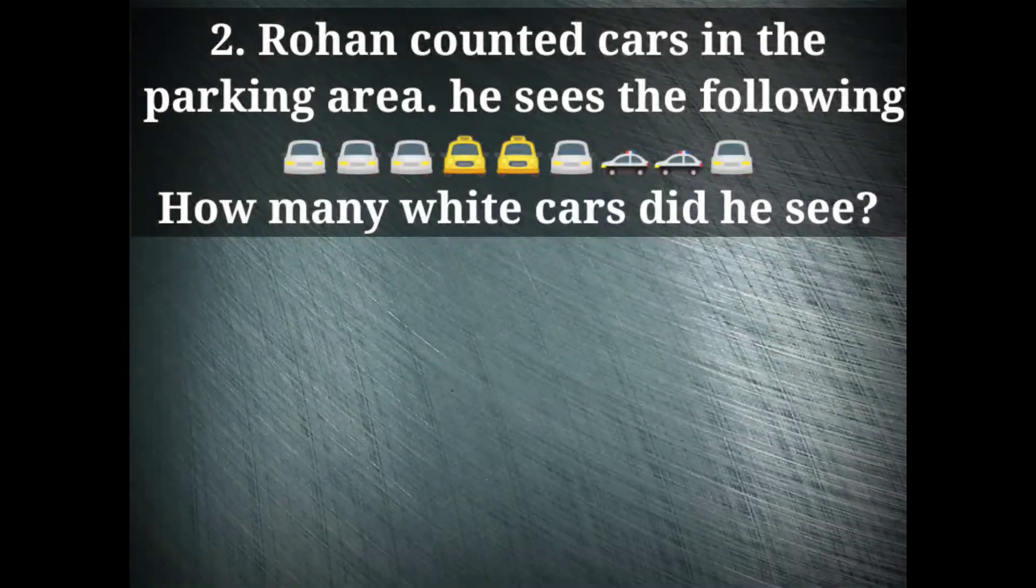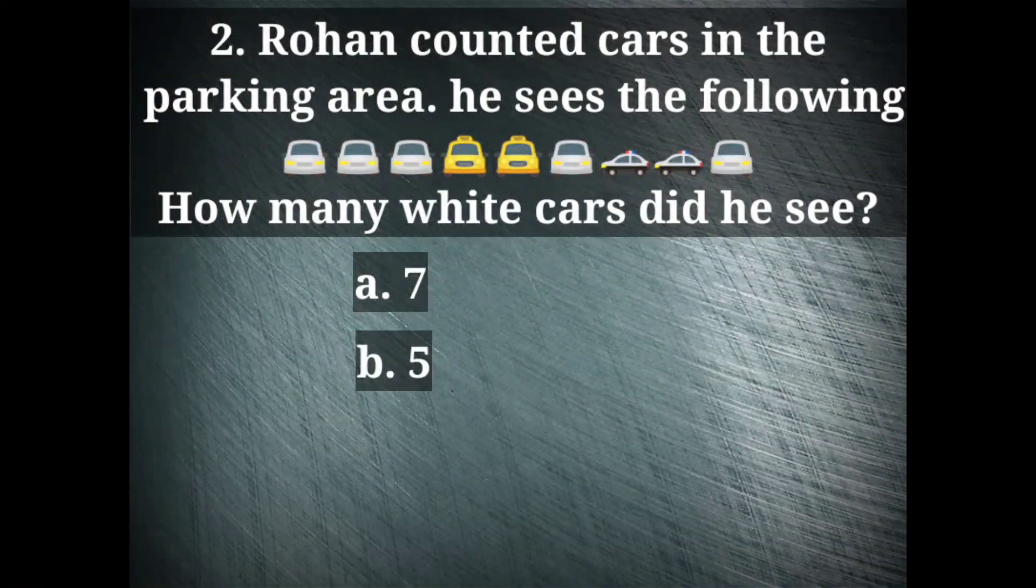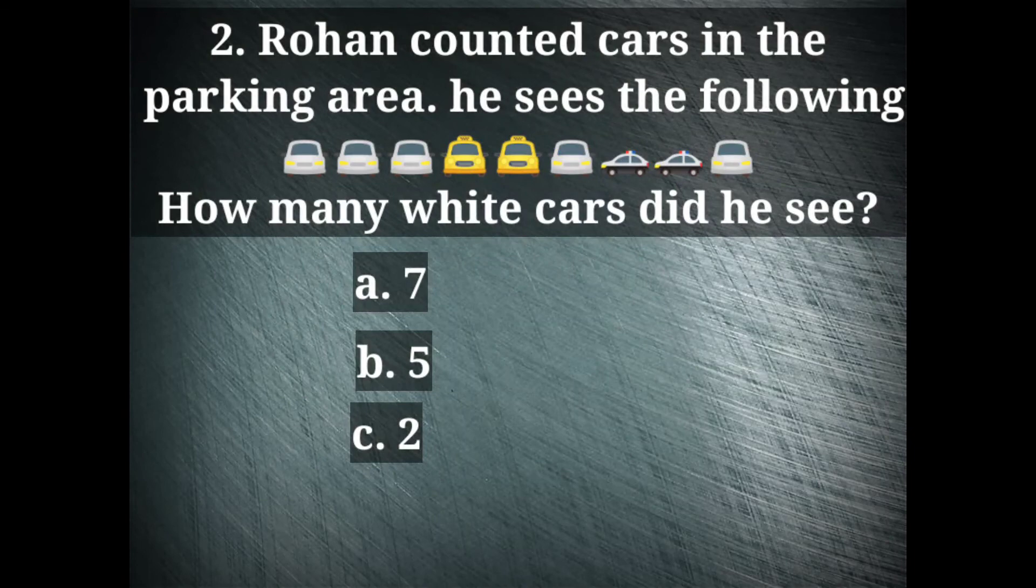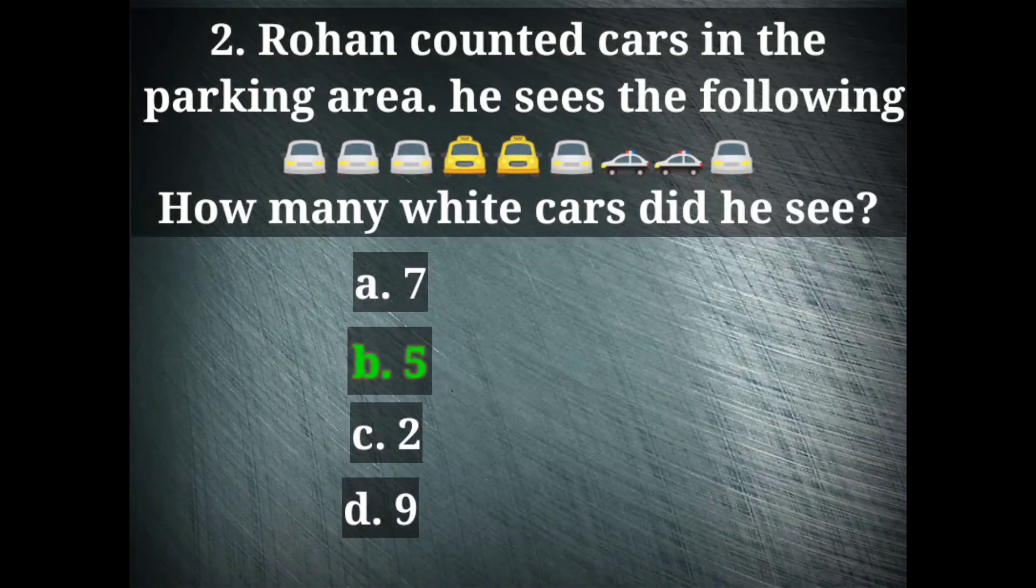Now, the last question. Rohan counted cars in the parking area. He sees the following cars. How many white cars did he see? Options are 7, 5, 2 and 9. The right option here is 5. This is a question based on pictographs. Some pictures will be given and you will have to analyze the picture and answer the questions.